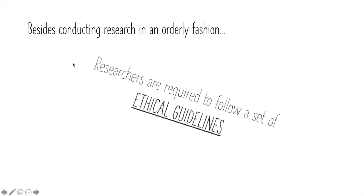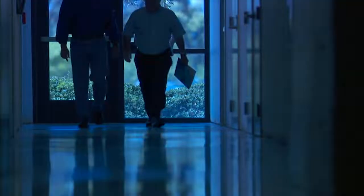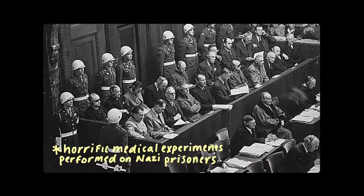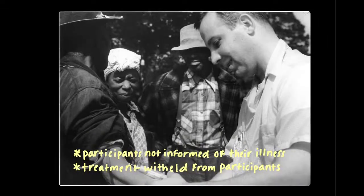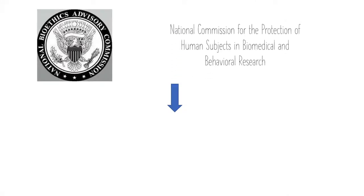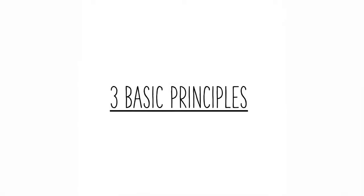Besides conducting research properly, researchers are required to follow a set of ethical guidelines. After human rights violations such as the experiments exposed at the Nuremberg War Trials, Milgram's Obedience Experiment, and the Tuskegee Syphilis Study, the National Commission for the Protection of Human Subjects in Biomedical and Behavioral Research was formed. This commission created the Belmont Report in 1979, which established three basic ethical principles to follow when doing research.